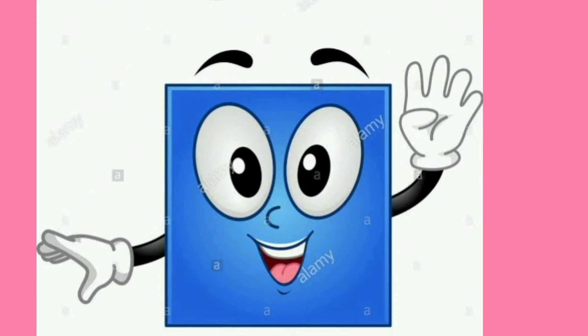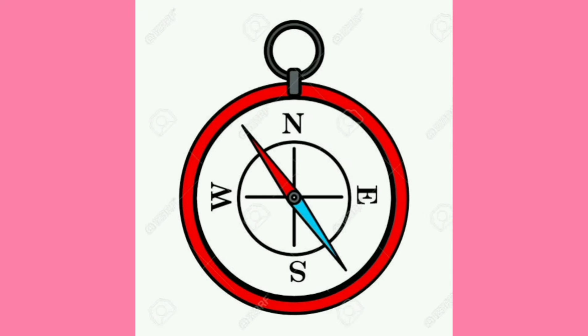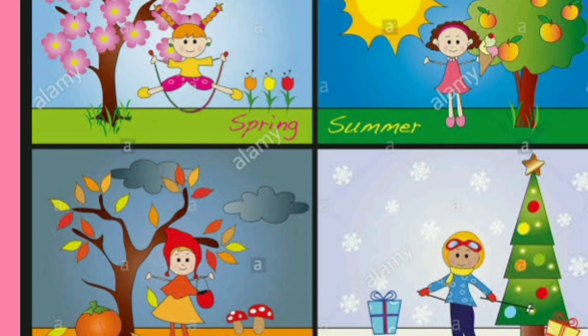We know that a square has four sides. There are four cardinal directions: north, south, east and west. There are four seasons in a year. Like that, there are four types of sentences.